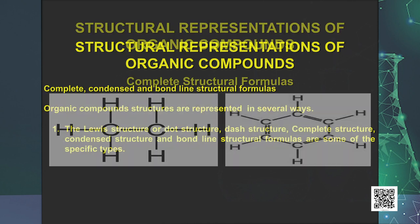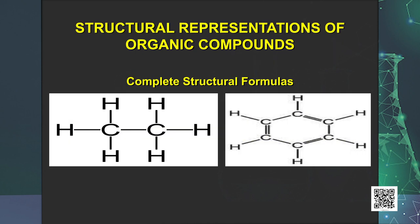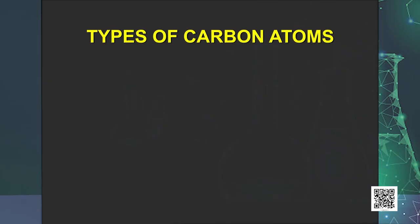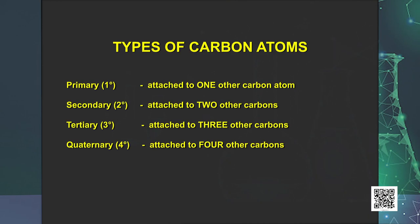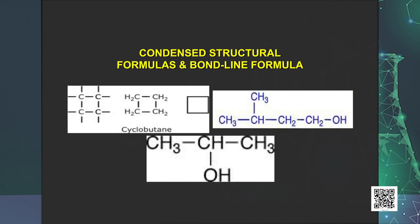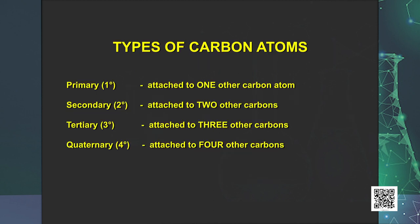The Lewis structures can be simplified by representing the two-electron covalent bond by a dash. Such structural representations are called complete or extended structural formulas. In complete structural formulas, we show all the covalent bonds. Before moving further, one more point to discuss: the types of carbon atoms in organic molecules. The carbon atoms in an organic molecule may be classified into four types — primary, secondary, tertiary, and quaternary. A primary carbon atom is attached to one other carbon atom, secondary to two, tertiary to three, and quaternary carbon atom is attached to four other carbon atoms.